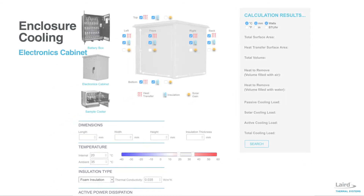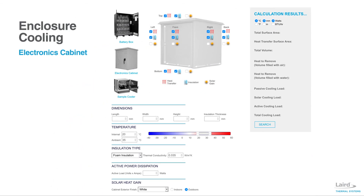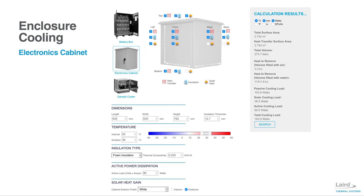In this example, we will use the enclosure cooling calculator to find the requirements of cooling a box of electronics. The first step is to select the example nearest your application, which in this case would be the electronics cabinet. In this view, you will notice that there are multiple sides to control heat transfer, solar gain, and also whether it has insulation or not.